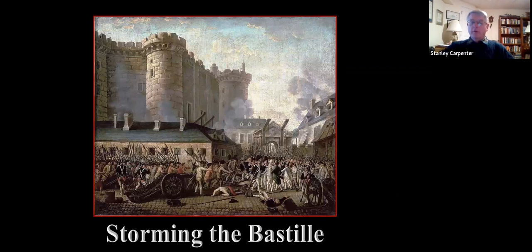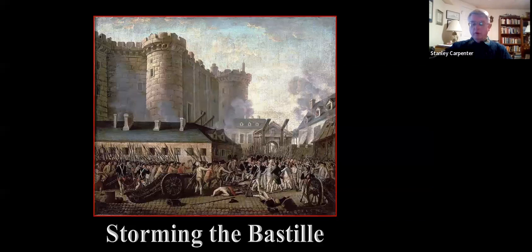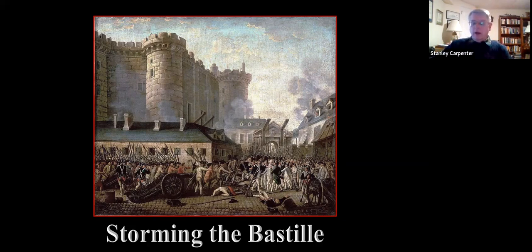One key event that kicked off the French Revolution was the storming of the Bastille — a medieval fortress in central Paris converted into a prison. The rumor went out that it was holding political prisoners who opposed the monarchy. In reality, there were only seven prisoners there when the crowd gathered on 14 July 1789. They demanded the release of political prisoners and then the governor's release of arms and ammunition stored there. When he refused, the crowd stormed it and captured the place. The storming of the Bastille became symbolic of the French Revolution and was subsequently demolished. That is why the French celebrate Bastille Day every 14th of July.